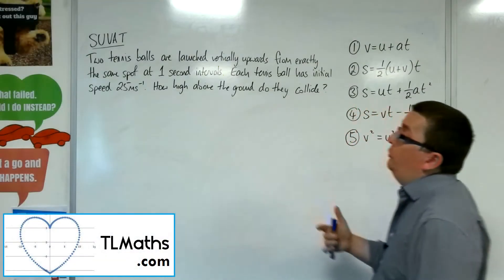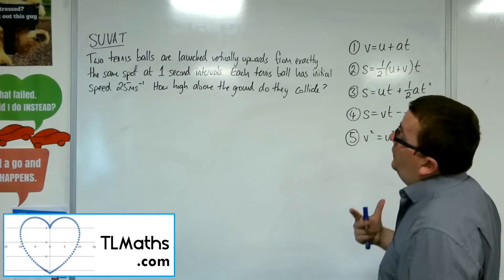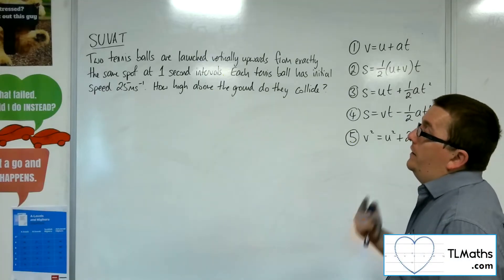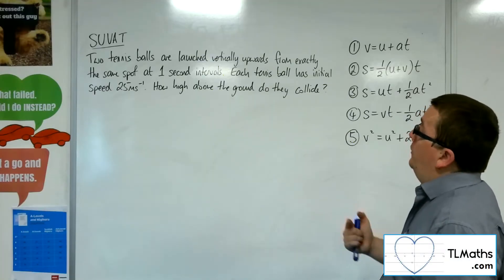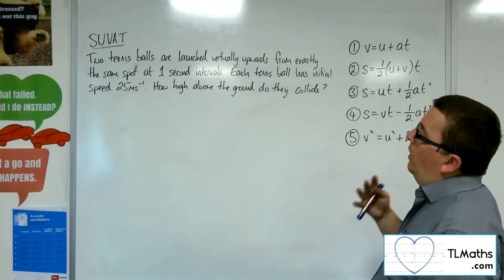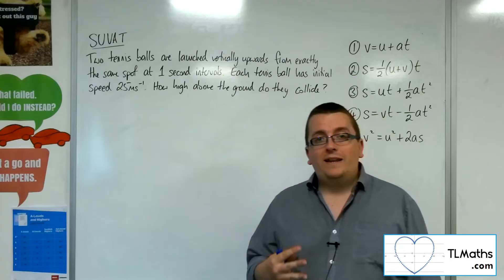In this problem, we have two tennis balls that are launched vertically upwards from exactly the same spot at one second intervals. Each tennis ball has an initial speed of 25 metres per second. How high above the ground do they collide?